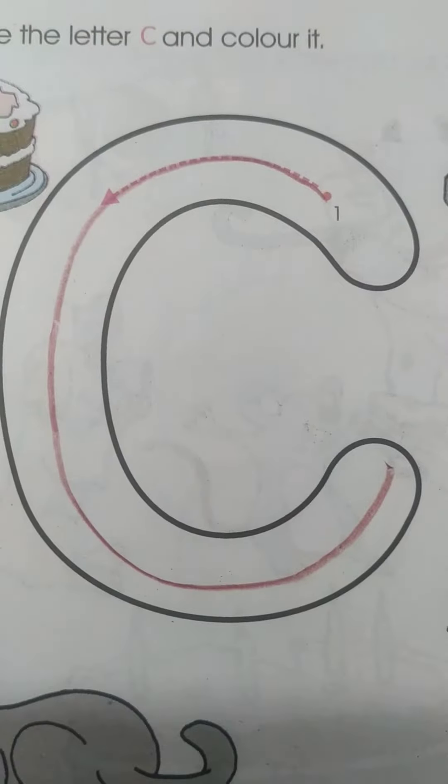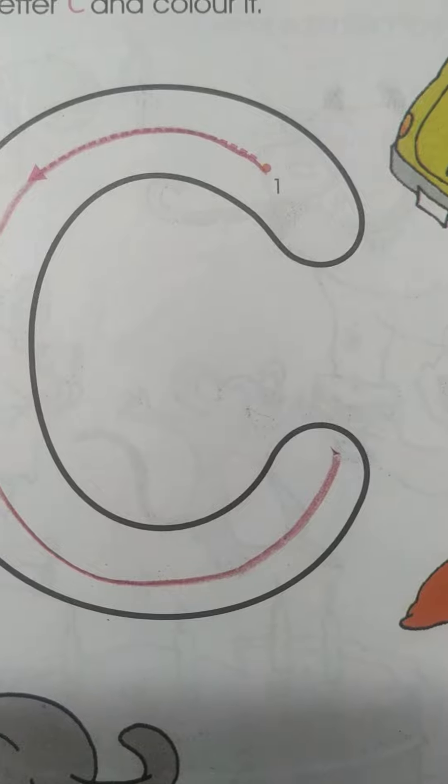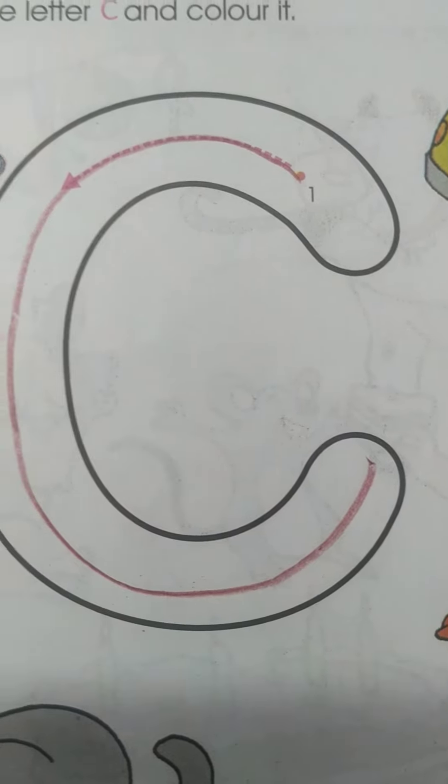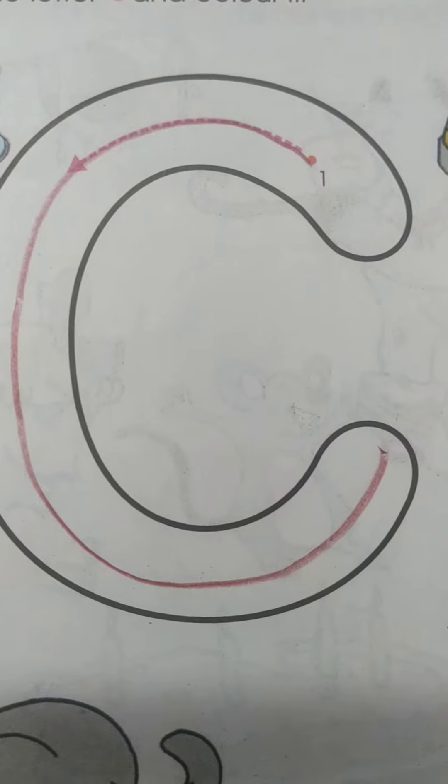The letter has a name and a sound. The name of this letter is C, and the sound of this letter is K.